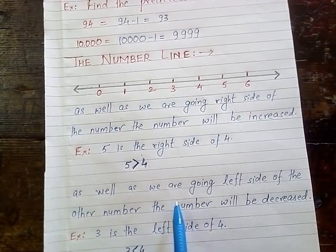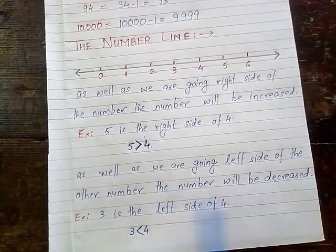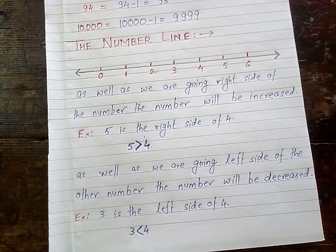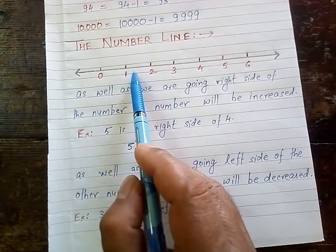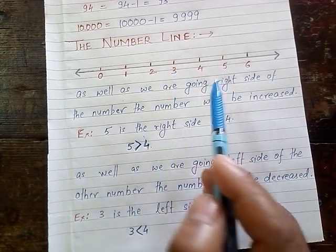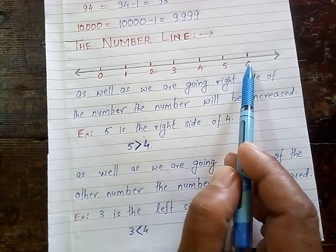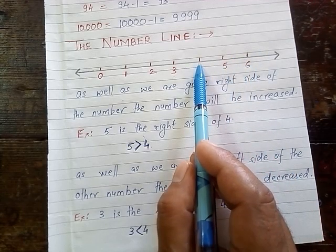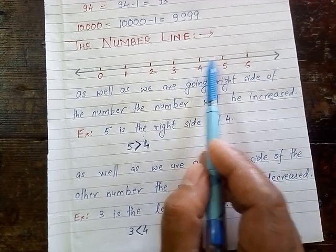Similarly, as we go to the left side, the number will be decreased. For example, 1 is to the left side of 2, so 1 is less than 2. 3 is to the left side of 4, so 3 is less than 4. 5 is to the left side of 6, so 5 is less than 6. 4 is to the left side of 6, so 4 is less than 6.